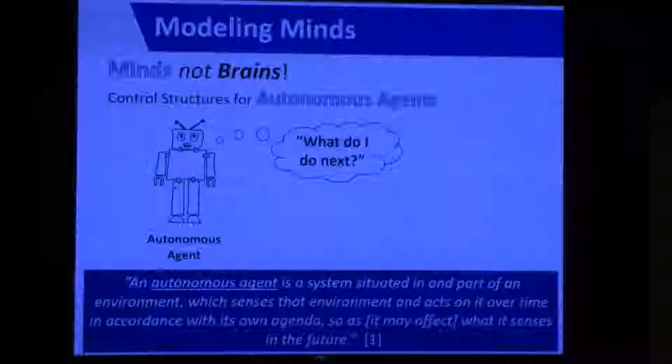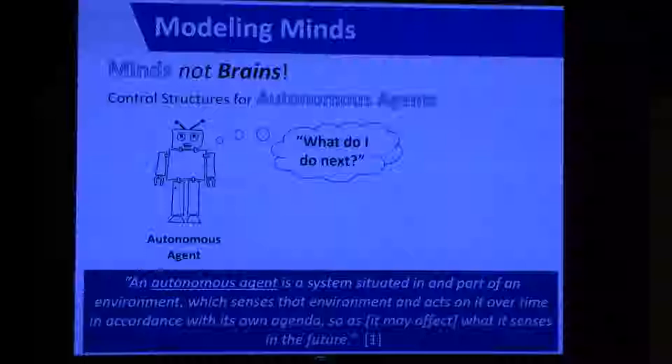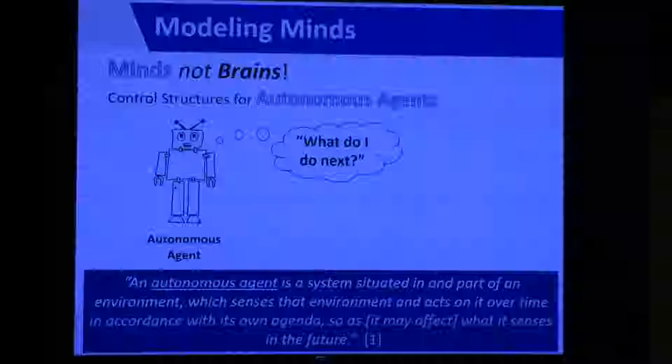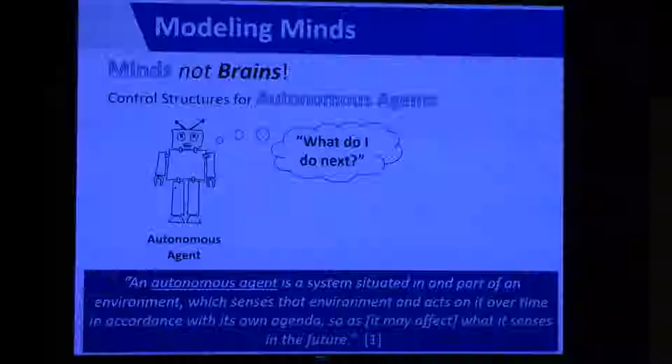So, modeling minds. Minds are not brains. Minds are not linked to a particular physical substrate. Minds can be realized, for example, in software — and that's one of the things we're personally interested in. By 'mind' we mean specifically something that implements control structures for autonomous agents. One of the critical things those control structures are trying to do is answer the question: what do I do next, what does this agent do next?